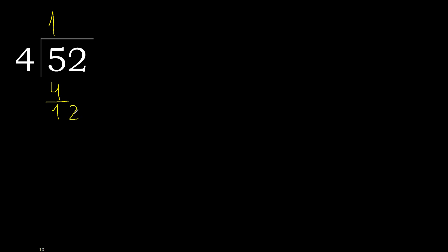12. 4 multiplied by 3 is 12 — not greater, perfect. 12 minus 12 is 0.